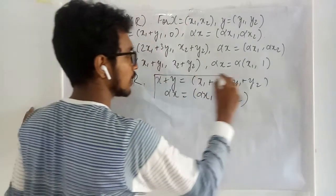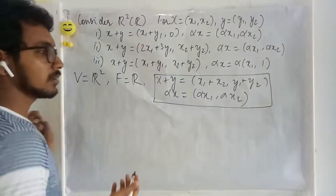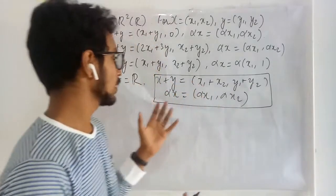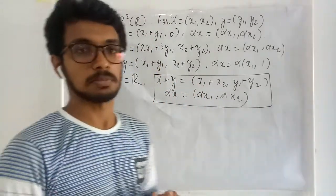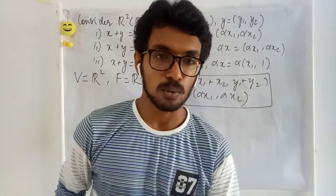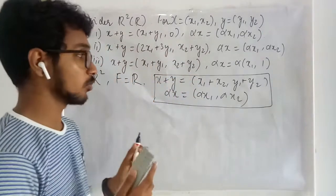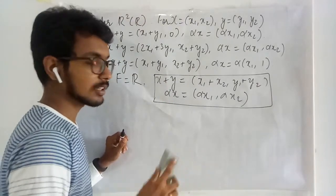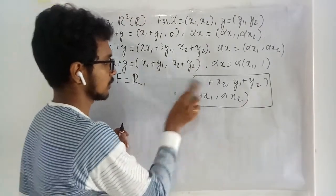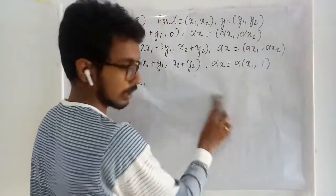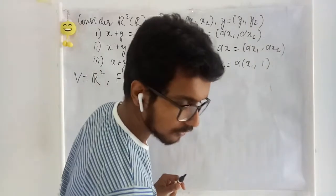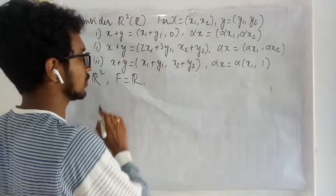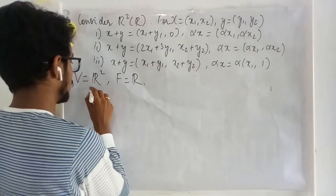This is called defining operations in the usual sense, and in this usual sense we can see that R² is a vector space. Now what we are going to explore is new definitions of addition and scalar multiplication and check whether they form a vector space or not. In the first example, addition is defined in a new form while scalar multiplication is defined in the usual sense.